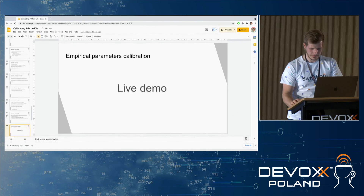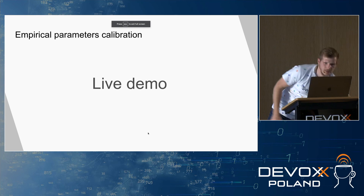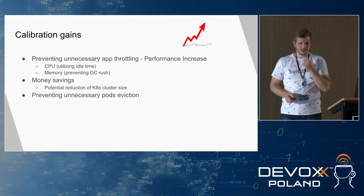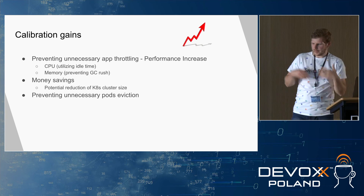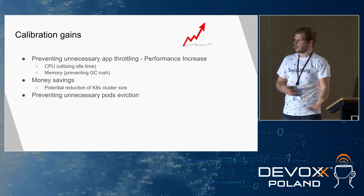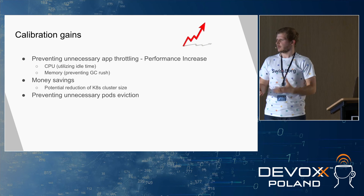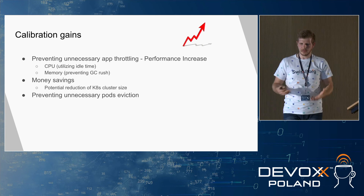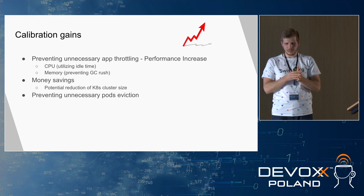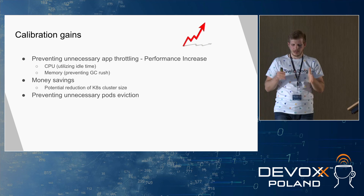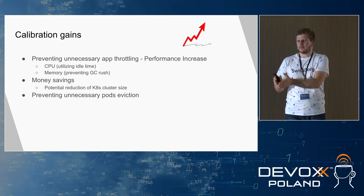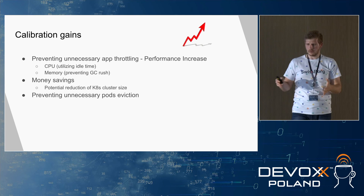What will be the gains from our calibration? In case we calibrate these parameters correctly, we will prevent unnecessary CPU throttling. Especially when we remove the CPU limit parameter, our application won't be limited on times when it can safely use the whole power of the node during idle time.